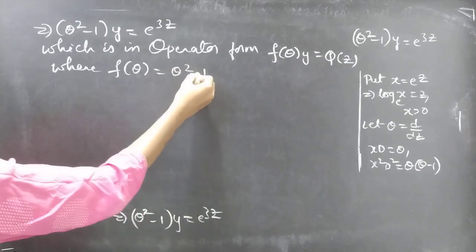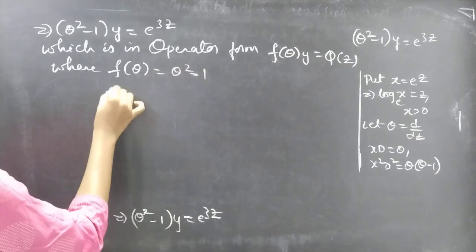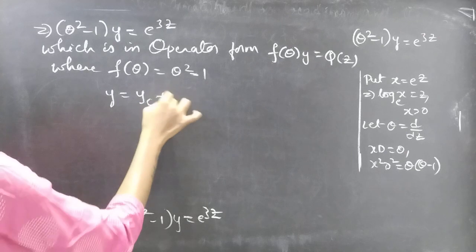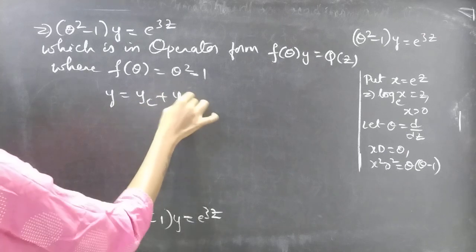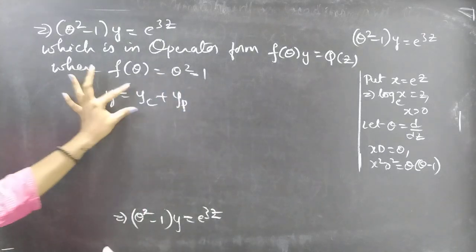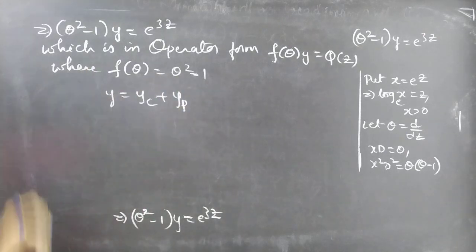Now we need to find the general solution of the given equation, which is given by y = yc + yp. We need to find yc and yp. We will find yc using the auxiliary equation.